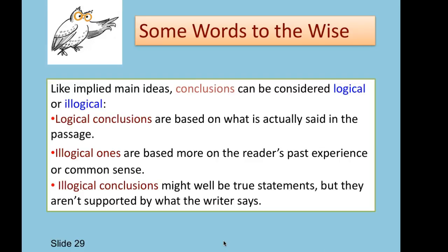Like implied main ideas, conclusions can be considered either logical or illogical. A logical conclusion is going to be based on what was actually said in the passage — think about the snowstorm driving example we just went over. Illogical conclusions are based more on our own past experience or common sense rather than what's stated in the passage. Sometimes illogical conclusions might be true statements, but they're just not supported by what the author says. With drawing conclusions, we're relying more heavily on the text than on our own life experiences.